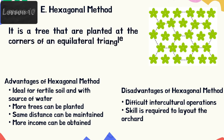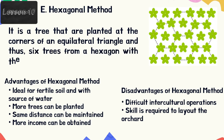Hexagonal method: trees are planted at the corners of an equilateral triangle, and thus six trees form a hexagon with the seventh tree at the center. This method is generally followed where the land is costly and very fertile with enough provision of irrigation water. Advantages: ideal for fertile soil and with a source of water; more trees can be planted; the same distance can be maintained; and more income can be obtained since more trees are planted.